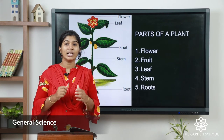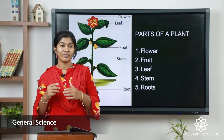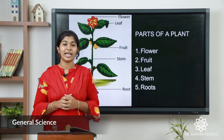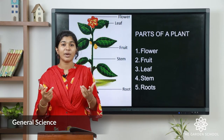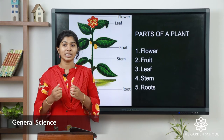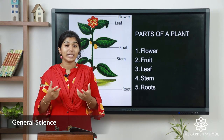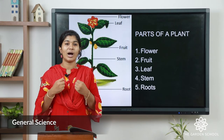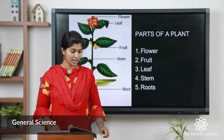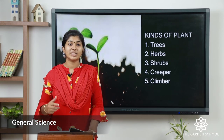For example, the mango flower forms into a mango fruit with a mango seed. For every plant, the root is under the soil. The root absorbs water from the soil.